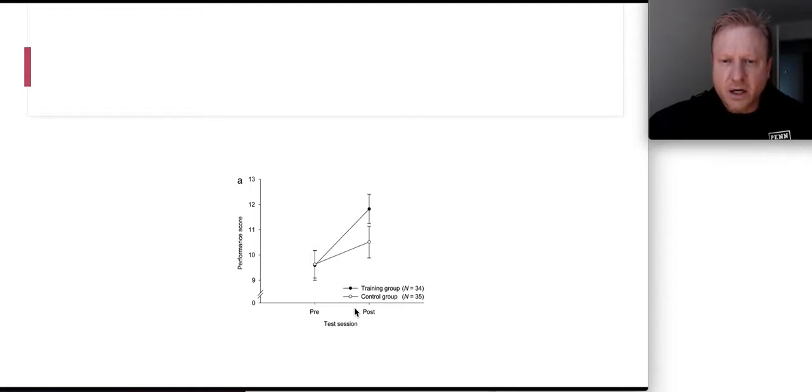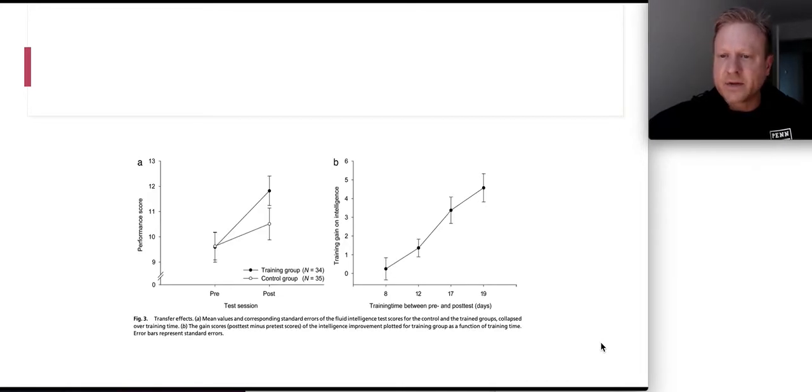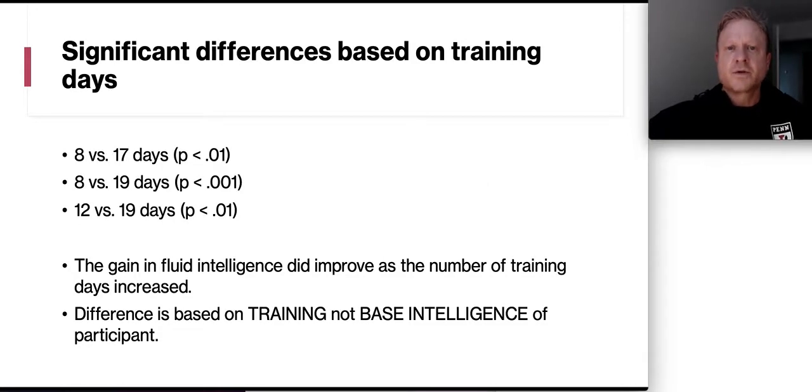And you can take a look here in this graph that the control group over here, their performance score is about a 9.5. But the training group, they're popping up here into 11.5. That's pretty significant. Now the training time between the groups, this is whether you went on 8 days or 19 days. Take a look at the training gain on intelligence. On the 8 day, you went from a .5. If you went for 19 days, you went up to 4.5. So, straight line. And again, this is just another way to take a look at the two pieces of data together. So there was a significant difference based on those training days. And you see that the p-values are below .01 on 8 days versus 19, 17, and 12 versus 19 days. So the gain in fluid intelligence did improve as the number of training days increased.